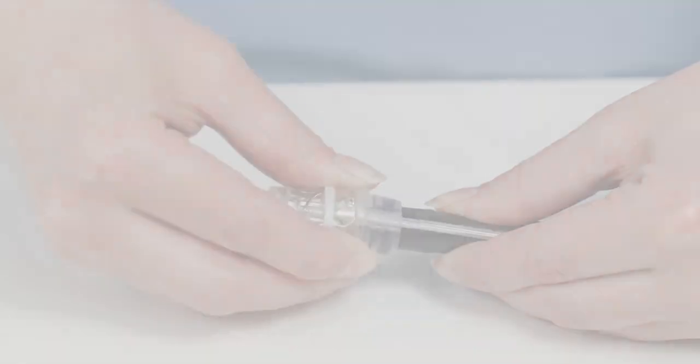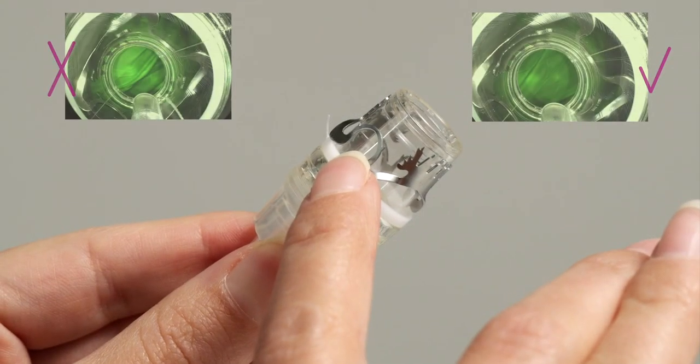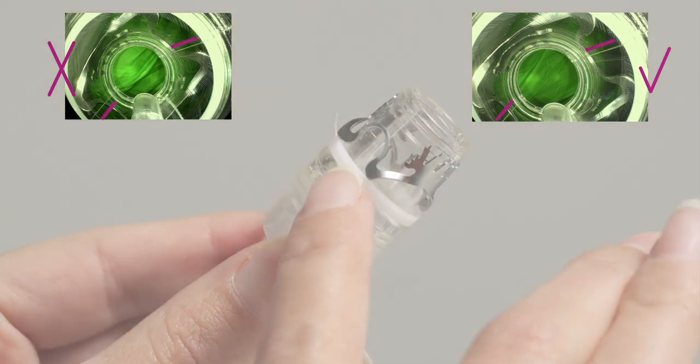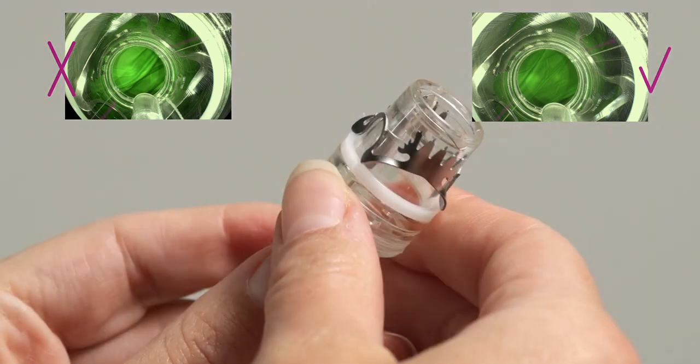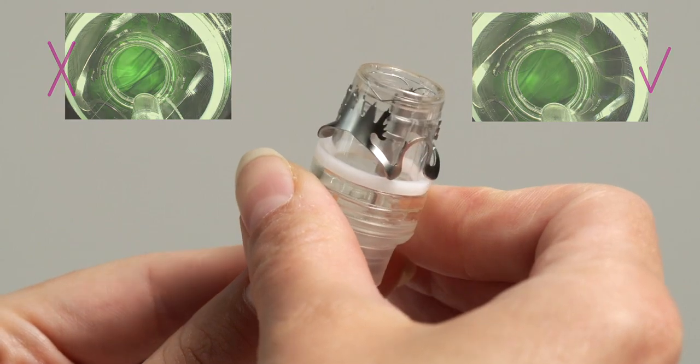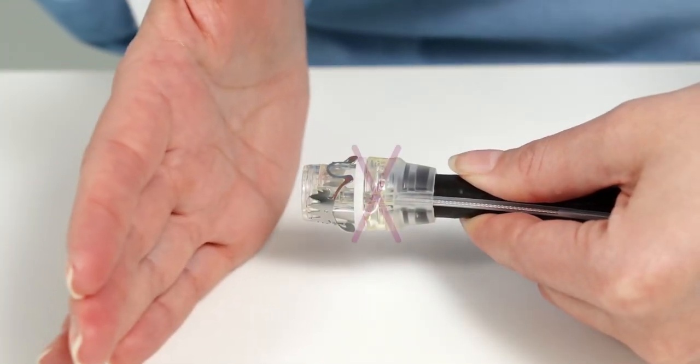During assembly, it must be ensured that the clip remains correctly positioned on the application cap. It must not be twisted or caught by the thread. The cap should not be pressed against the hand or table during assembly, as this could damage the cap.